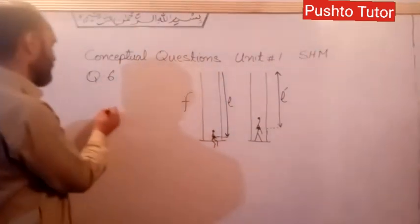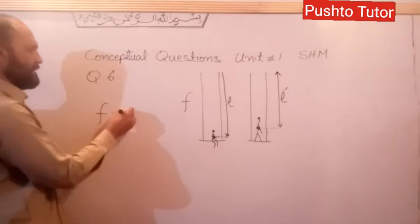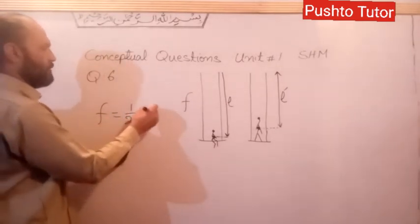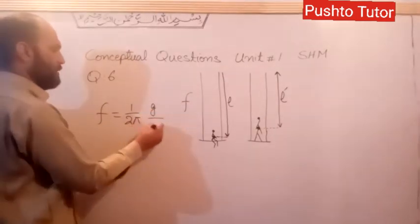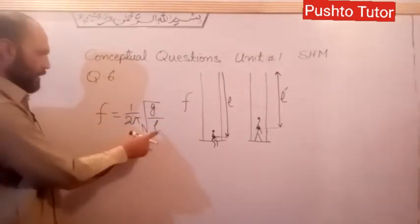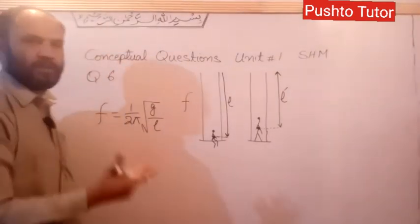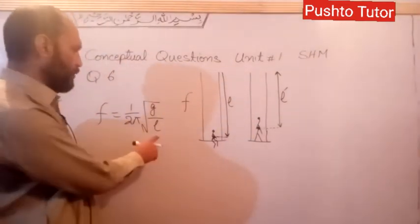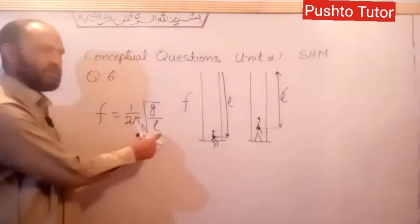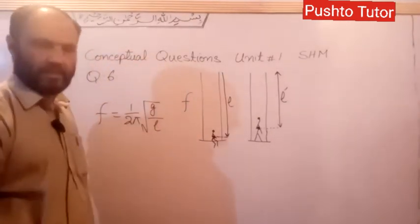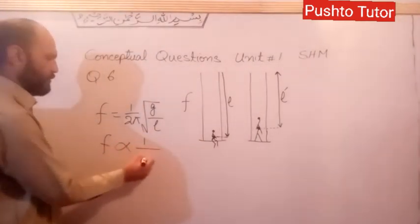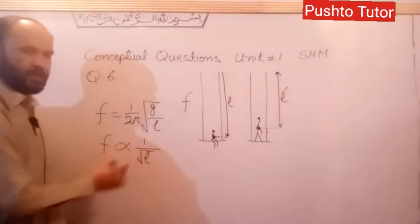The frequency of a pendulum is given by f = 1 over 2π times the square root of g over L. F is inversely proportional to the square root of L.